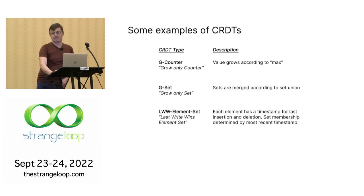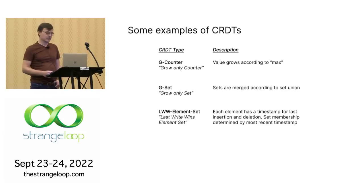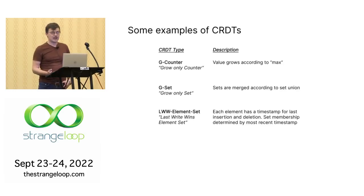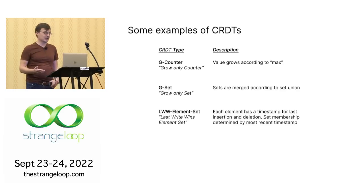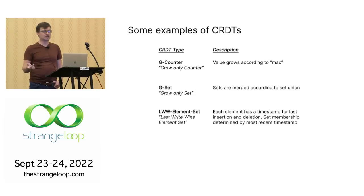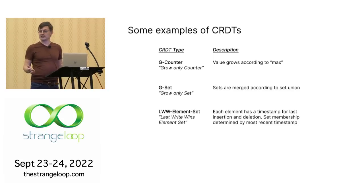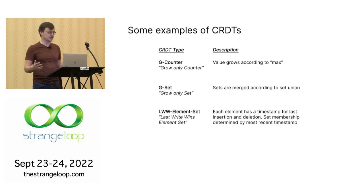Some examples: you can have a grow-only counter where a value grows according to the maximum of two numbers. You can have a set that grows, where sets are merged using the set union function. You can have more complicated things like a last-write-wins element set, where the membership status of an element is determined by the most recent deletion or insertion. People have built big systems using CRDTs, including Redis, distributed databases, and distributed hash tables.